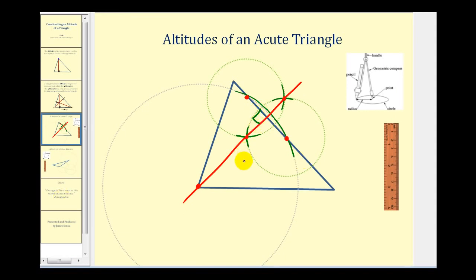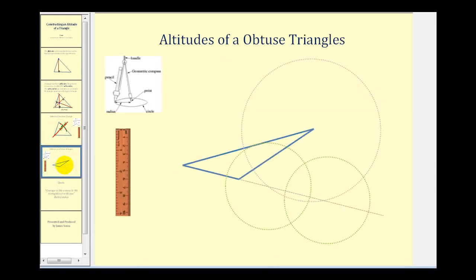Now let's take a look at the construction when we have an obtuse triangle. If we want to construct the altitude from this vertex to the opposite side, notice how we're going to have to extend the opposite side in order to make a segment that's perpendicular to that side. So with our straight edge we'll go ahead and extend this side, then perform the same procedure.